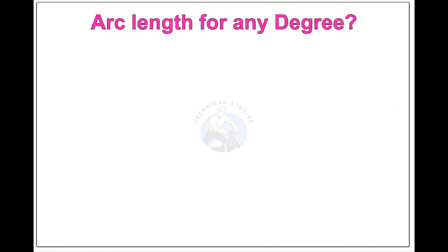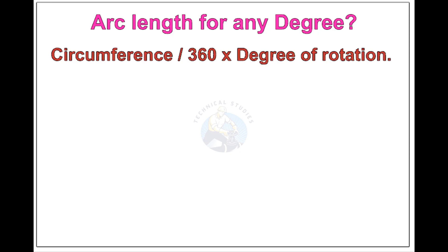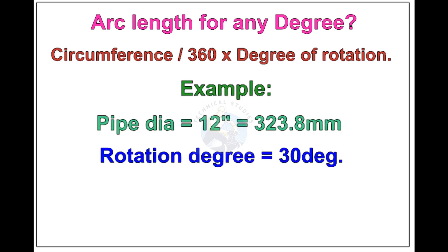Arc length of any degree: circumference of the pipe divided by 360, times the degree of rotation. Let us check the arc length of a 12-inch pipe rotated 30 degrees. Apply the formula. The answer is 84.8 millimeters.